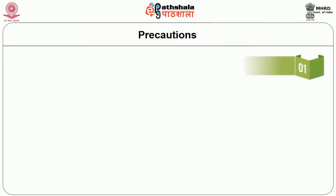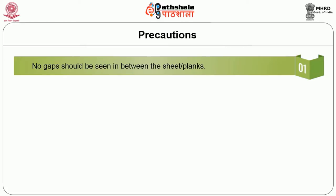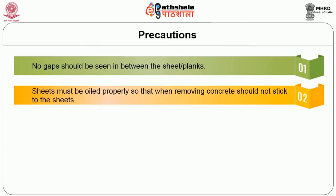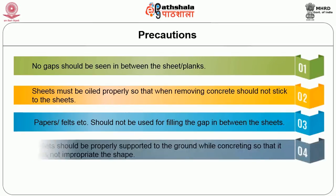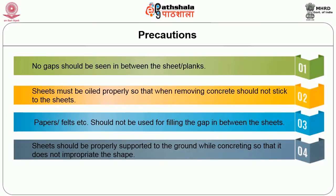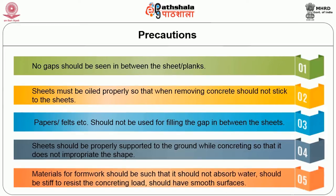Precautions to be followed in the formwork for roofing: no gap should be seen between the sheets or planks, and the sheets must be oiled properly so that when removing, concrete should not stick to the sheets. Papers or felts etc. should not be used for filling the gaps between the sheets. Sheets should be properly supported to the ground while concreting so that it does not distort the shape. Materials for formwork should be such that they do not absorb water, should be stiff to resist the concreting load and should have a smooth surface.